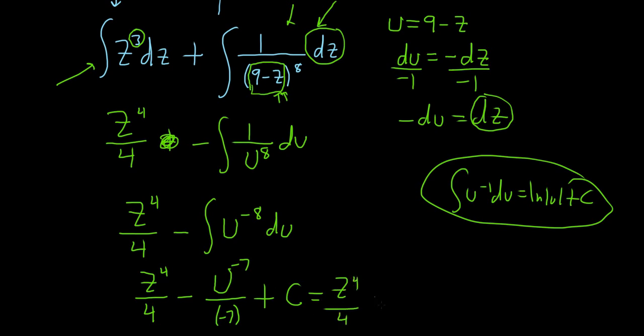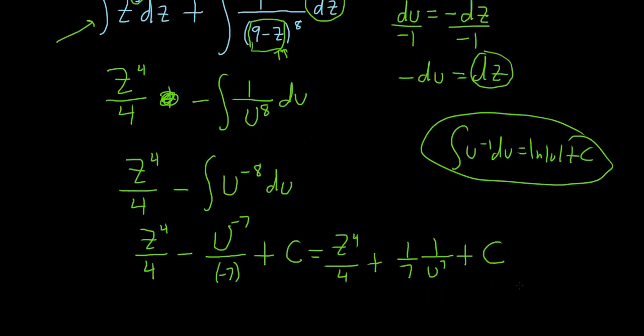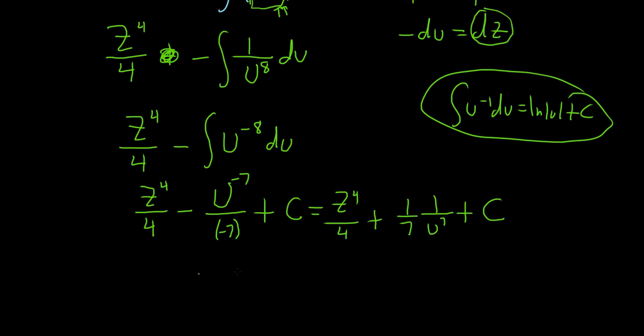So this is z to the 4 over 4. Negative and negative is positive. So this is plus 1 over z. And let's bring this bad boy downstairs. U to the 7 plus c.